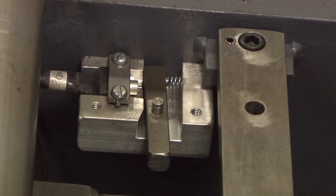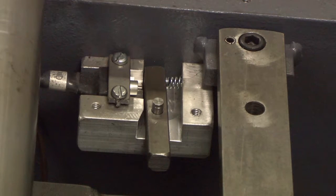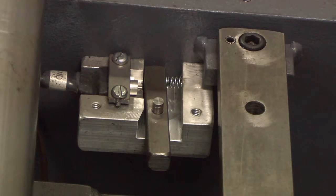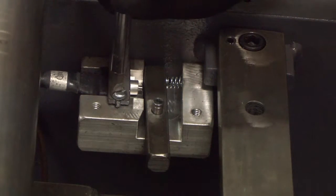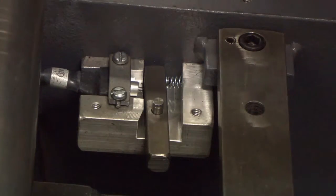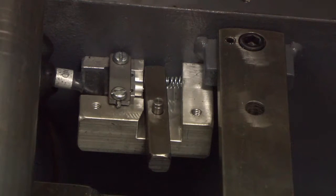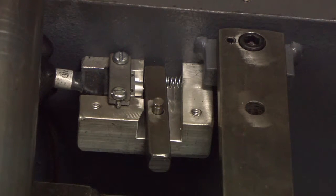If the spring loaded actuator bar is not depressing the switch when the feed is retracted to the rear of the saw as shown here, loosen the retainer strap that holds the switch in place by loosening the two screws that hold the strap against the switch.